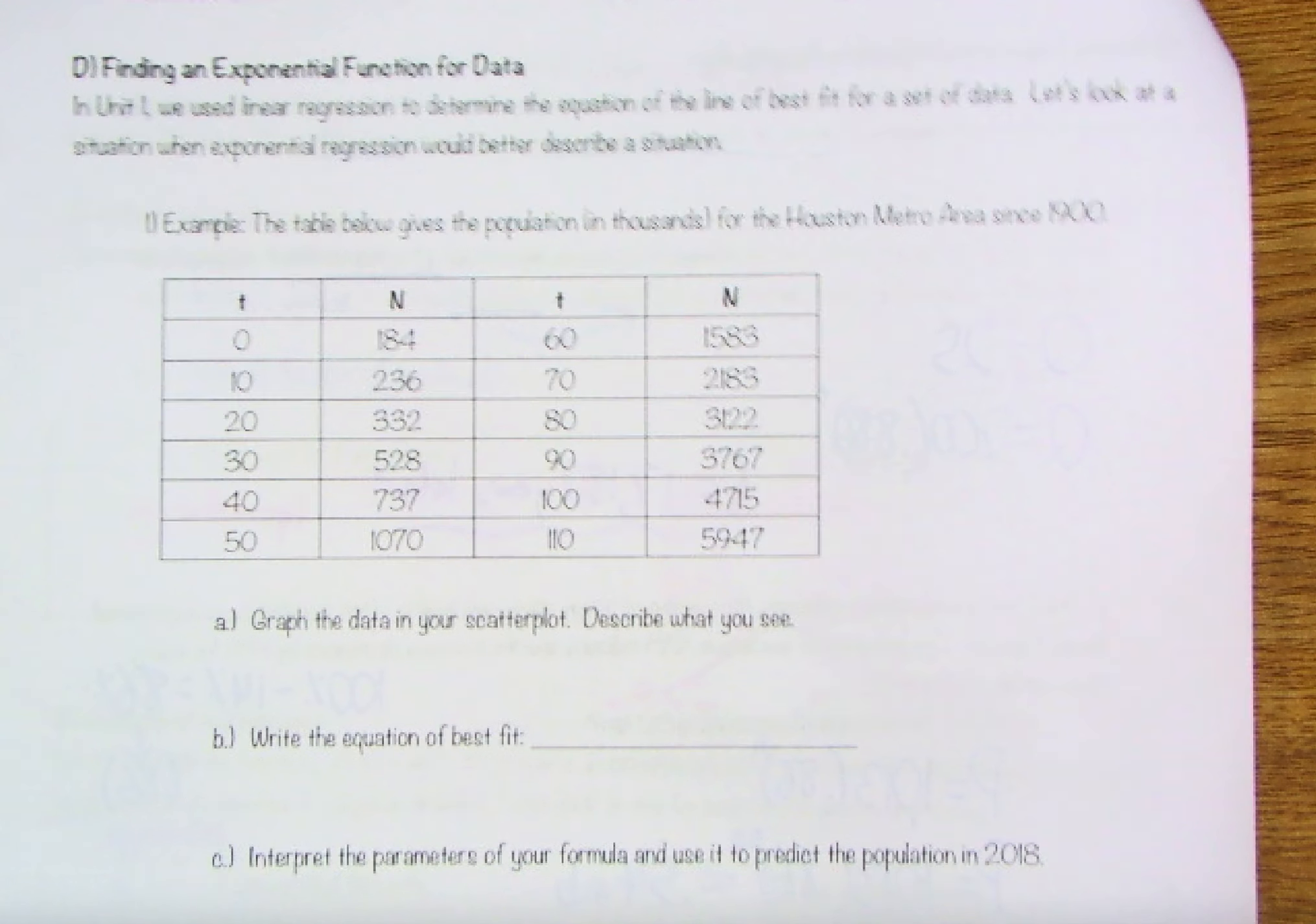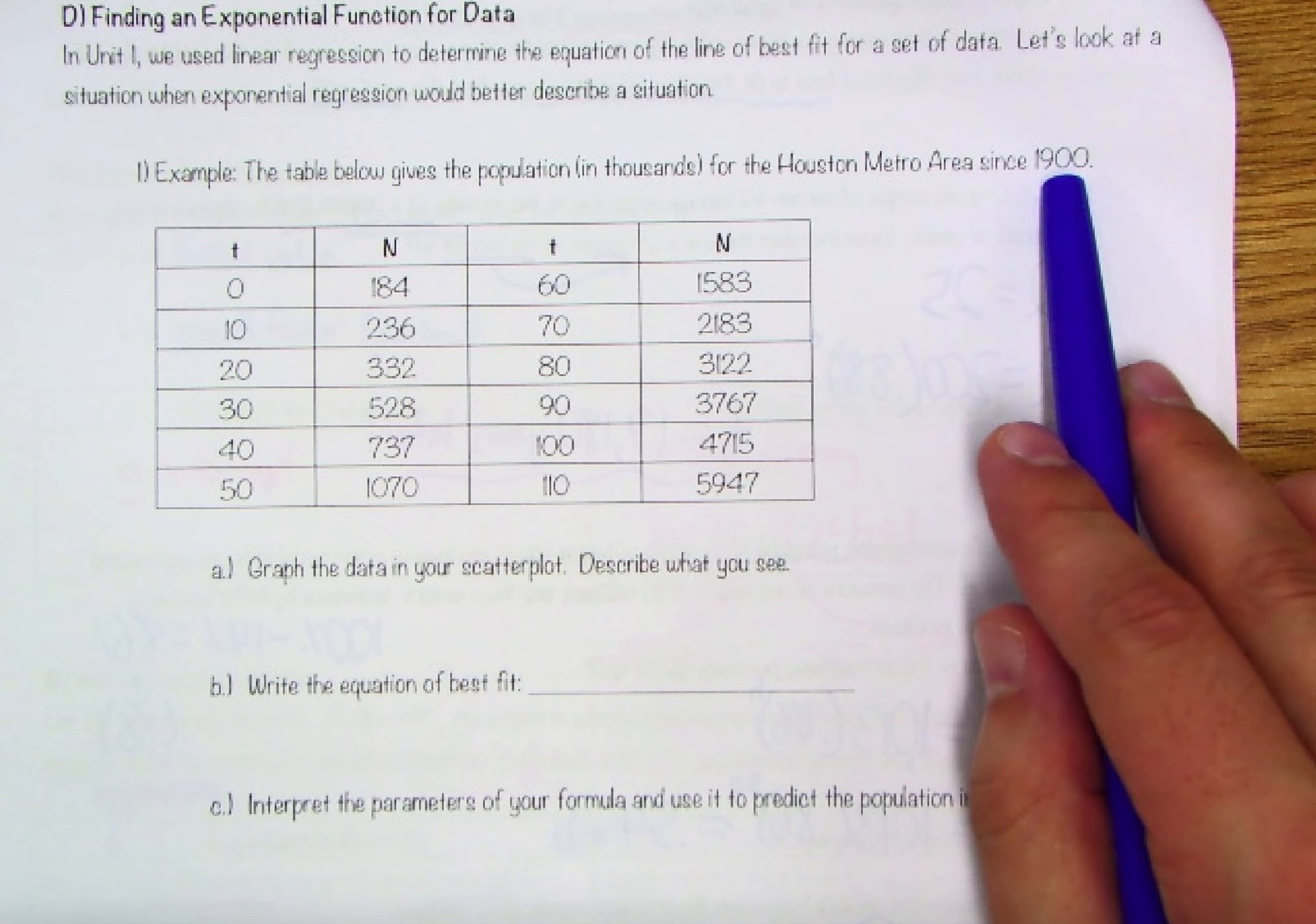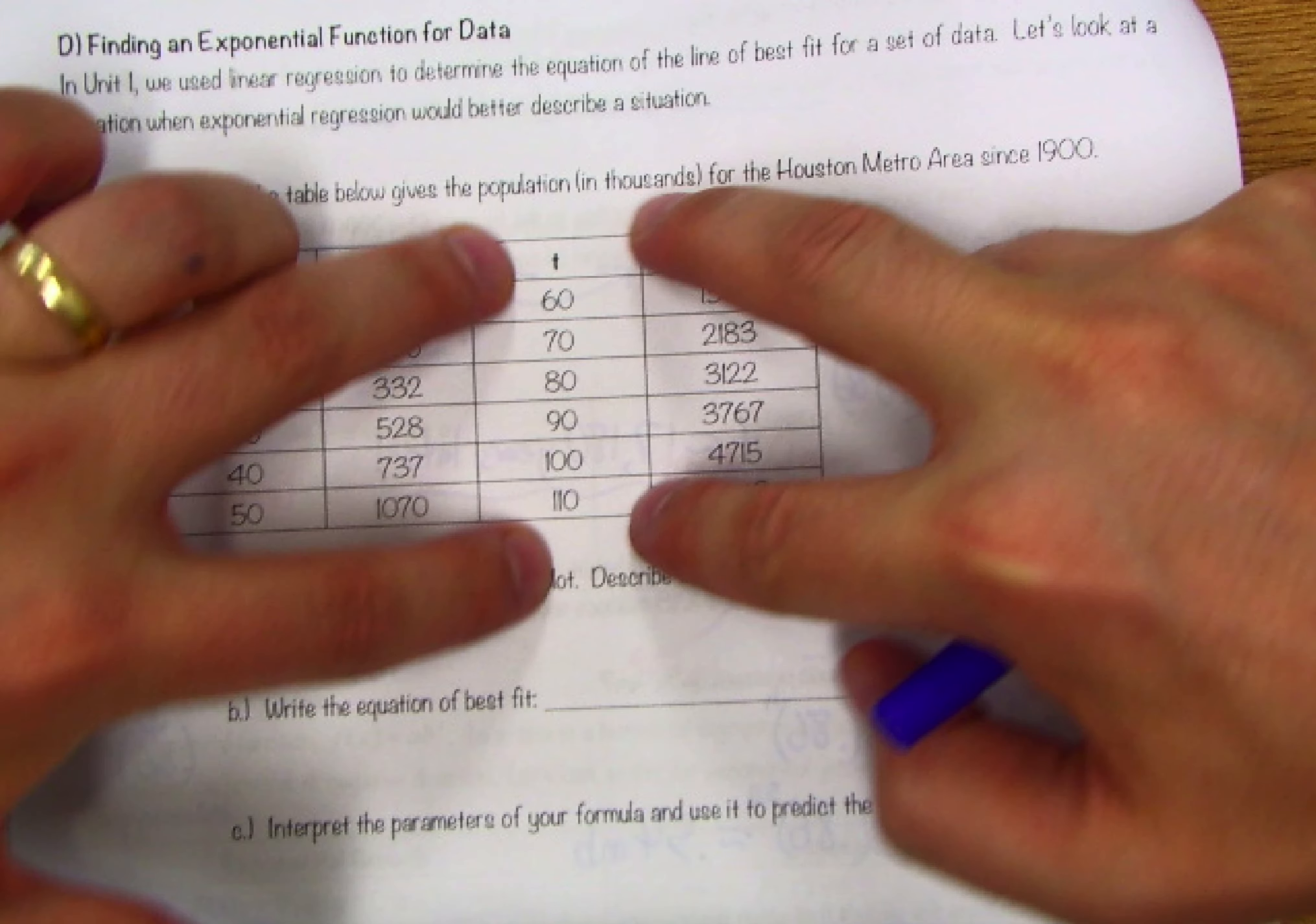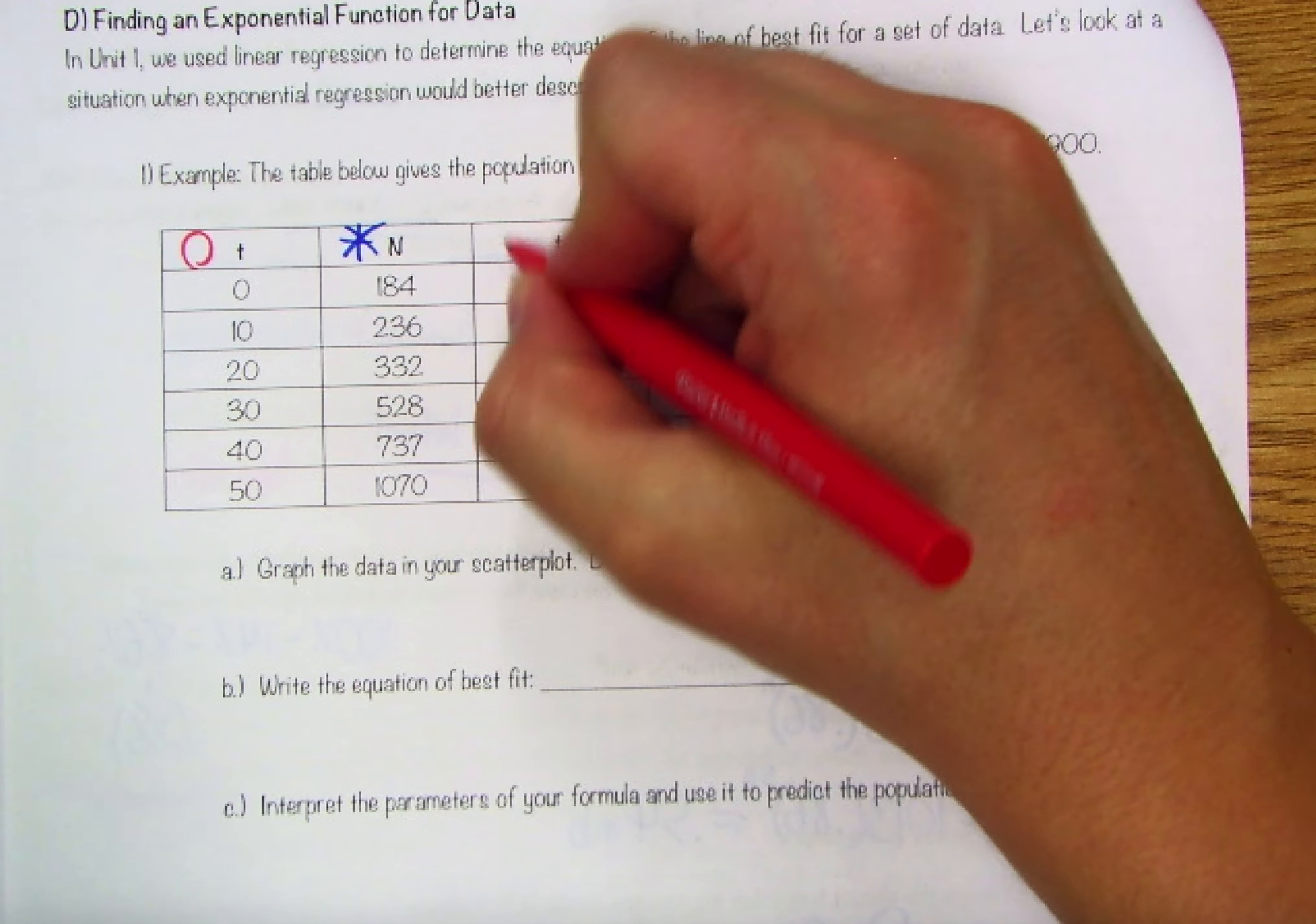Finding an exponential function for data. In unit 1, we use linear regression to determine the equation of the line of best fit for a set of data. Let's look at a situation where exponential regression would better describe a situation. The table below gives the population in thousands for the Houston metro area since 1900. We've got T values 0, 10, 20, 30, 40, 50 continuing up to 110. These are your outputs. The other ones would be your inputs.